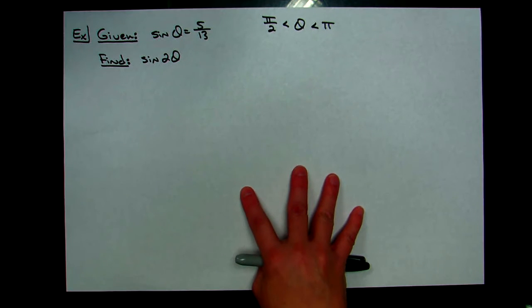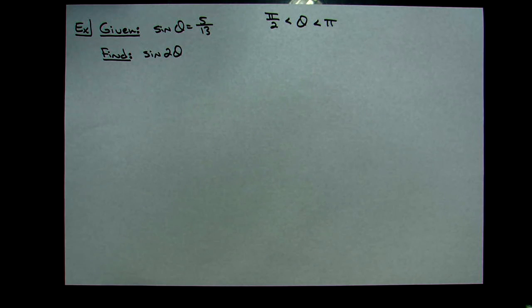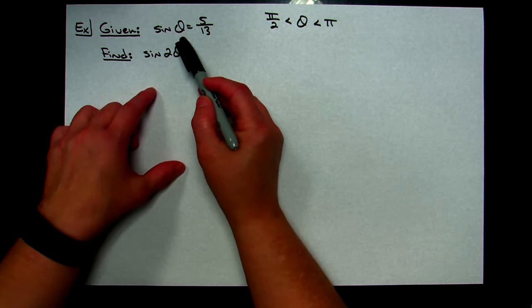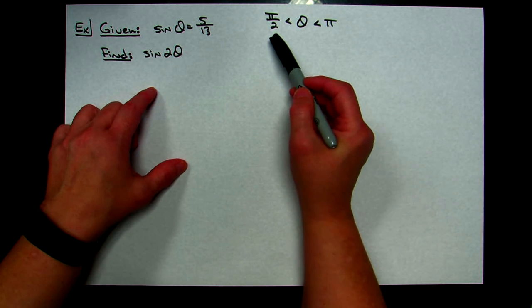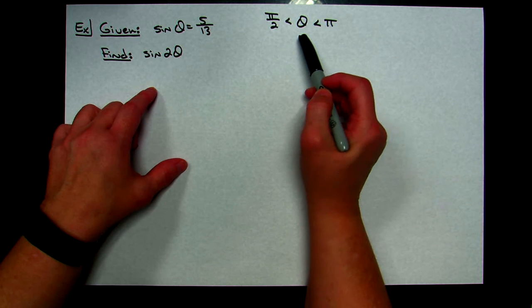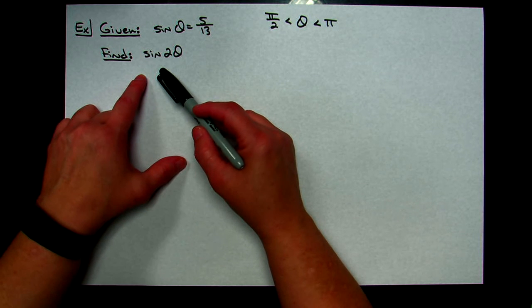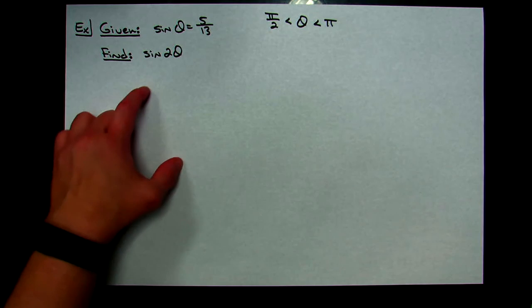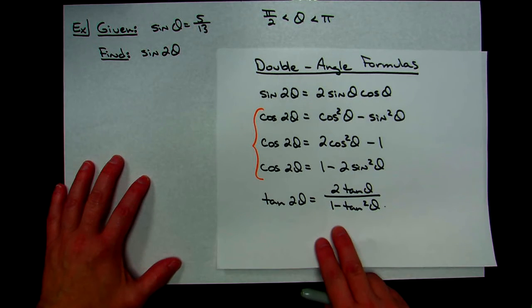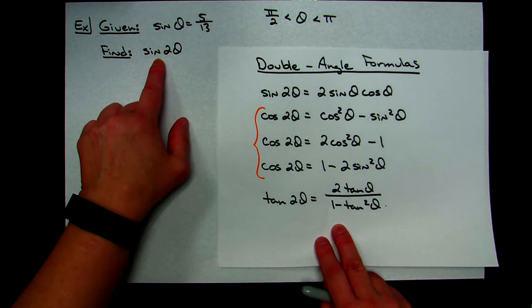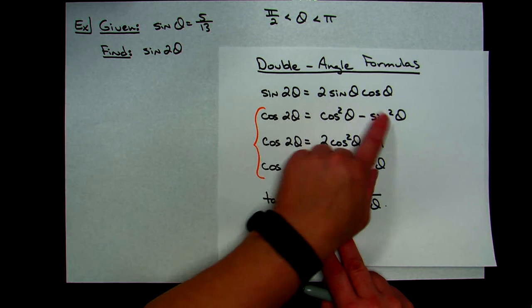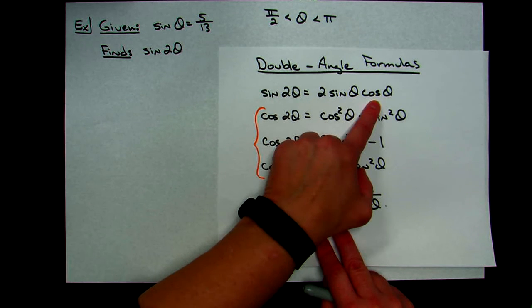For our first example, we're given that sine of θ equals 5 over 13. They've also told us that π/2 is less than θ is less than π, and they're asking us to find sine of 2θ. That tells us we need to use one of the double angle formulas. If I'm trying to find sine of 2θ, I need both sine and cosine of θ in order to work this formula out.